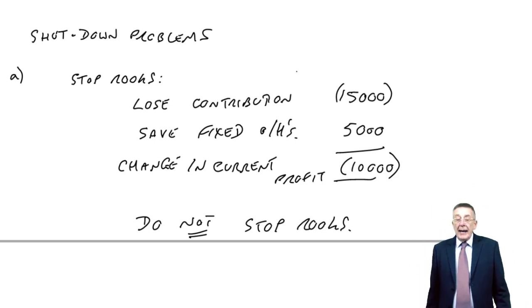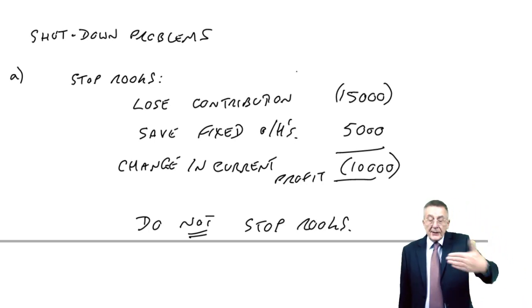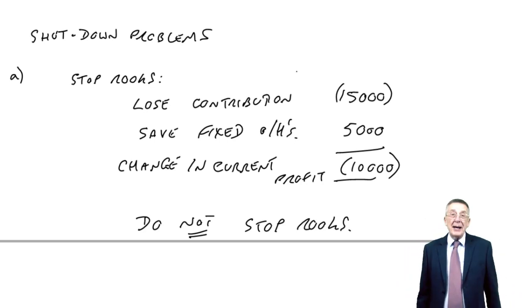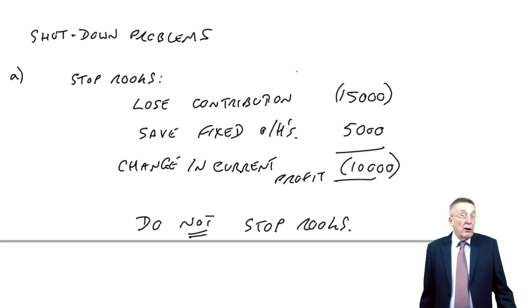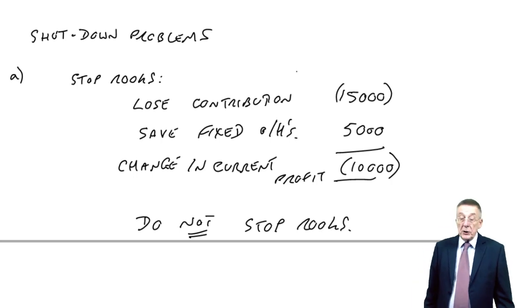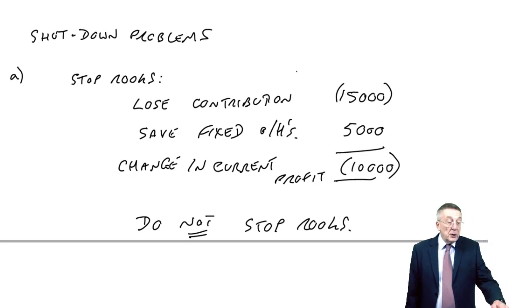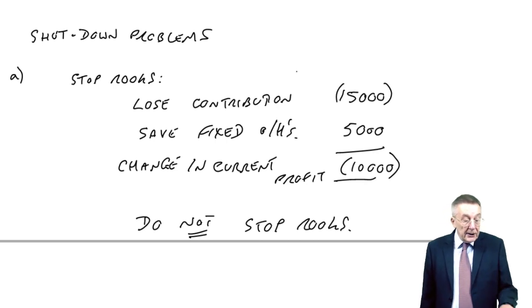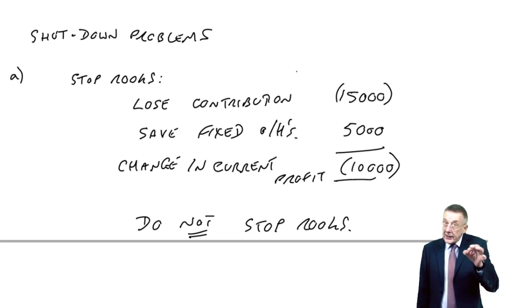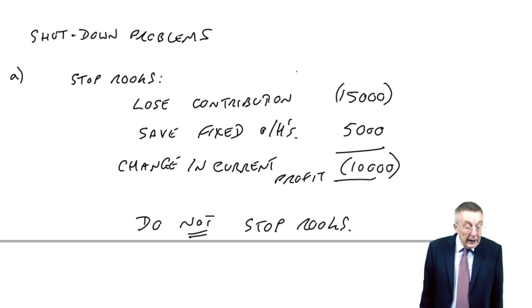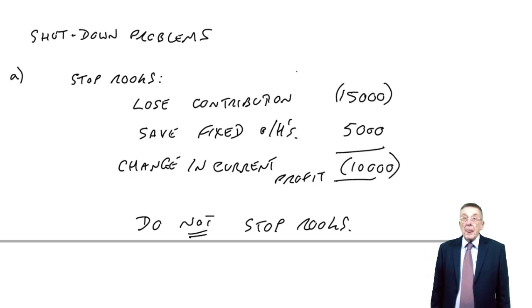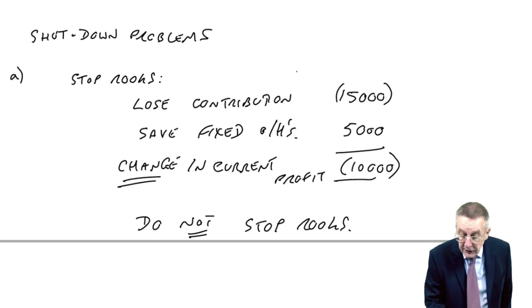There is more than one way of getting the same answer — it doesn't matter in the exam. What you could do is rewrite the total column: total sales will just be pawns and bishops, total variable costs will just be pawns and bishops, fixed costs will be 50,000 — they'll only fall by 5,000. You'll come to exactly the same conclusion.